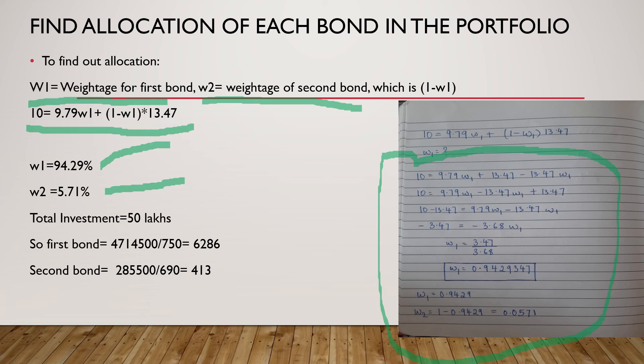After you have got these weightages, now what is the total investment that we have to do? We have to do a total investment of 50 lakhs. Out of 50 lakhs, 47 lakhs 14,500 will be in the first one because 94.29% of 50 lakhs is this much. Since each bond is priced at 750 rupees, if we divide it we will reach to an approximate value of 6,286.